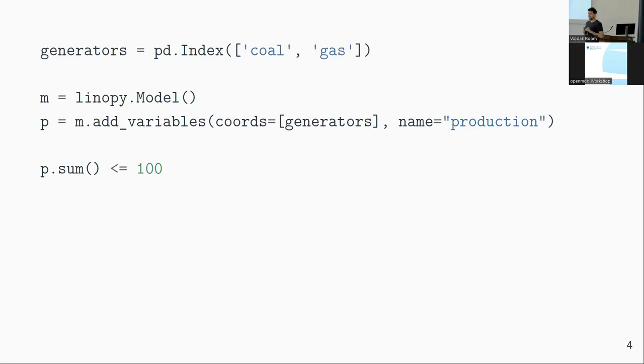Just to give you a hint on how the syntax is working in Linopy, it is very much aligned with pandas and xarray, so it's working with coordinates and labels. Just to give you a hint of variables - here you have, for example, a generator set of generators which is coal and gas. You would define a Linopy model, and to that Linopy model you would add a variable which is called here 'production'. It has the coordinates generators, so we have a production for coal and gas.